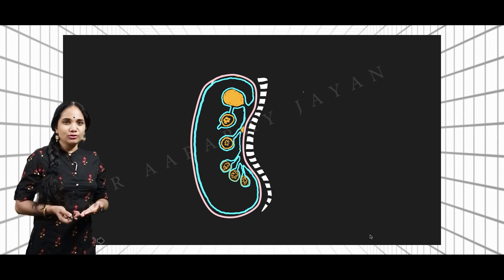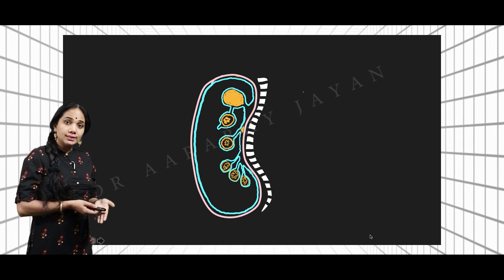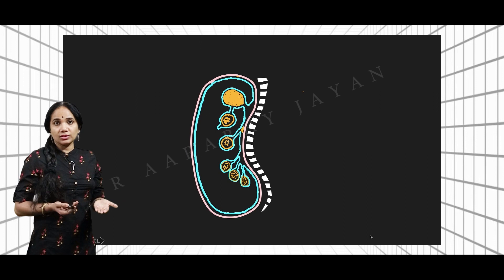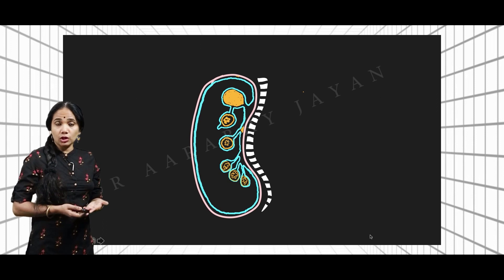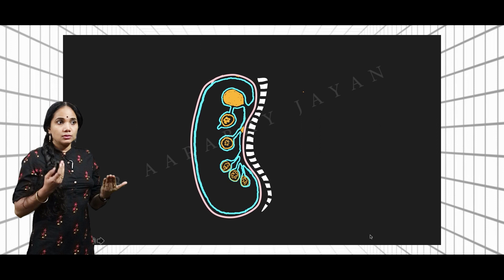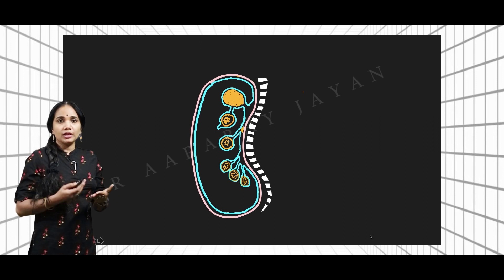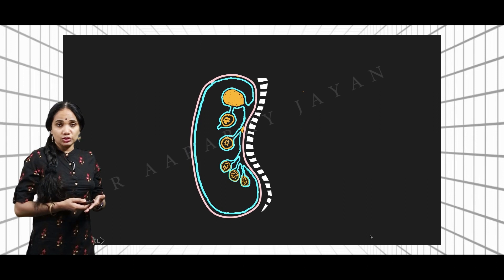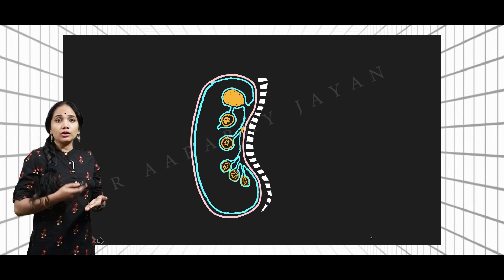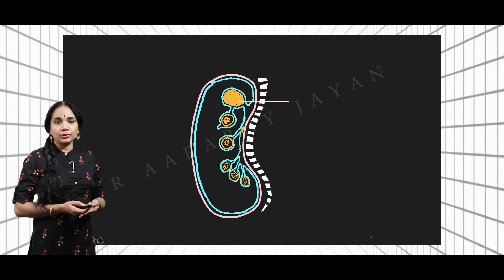The mesentery is specific to the part of the peritoneum which suspends the small intestine. When it comes to the transverse colon we call it the mesocolon. When it comes to the ovary it becomes the mesovarium. When it comes to the sigmoid it becomes the mesosigmoid. So depending on what organ is suspended, the mesentery changes its name.